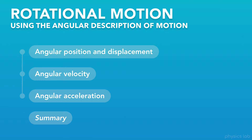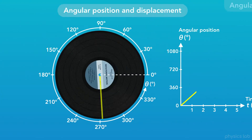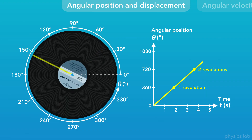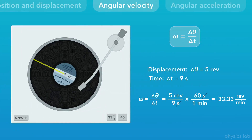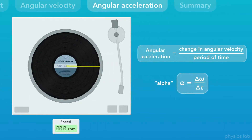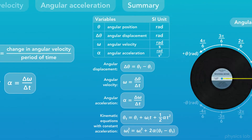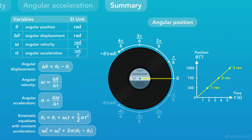Hey everyone, in this video we're going to learn about rotational motion using the angular description of motion. We'll cover angular position and displacement, angular velocity, and angular acceleration. Then we'll do a summary of the main points at the end.